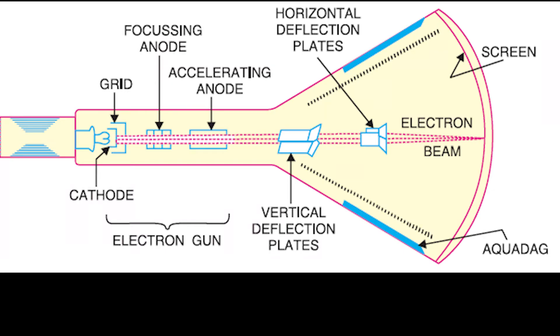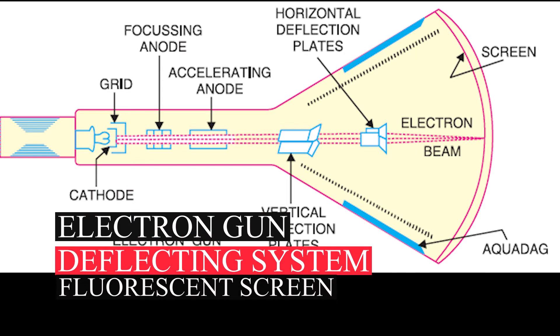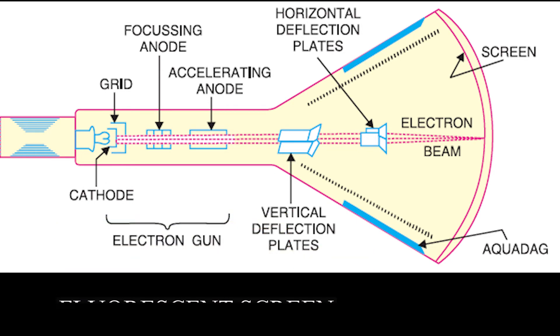A cathode ray oscilloscope is an electrical instrument used to display waveforms and also measure voltages. The main feature of the cathode ray oscilloscope is the cathode ray tube. The cathode ray oscilloscope has three main parts: the electron gun, the deflecting system, and a fluorescent screen.